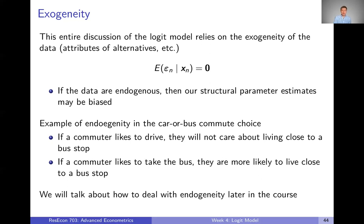Let's look at an example of endogeneity, going back to the car versus bus commute choice. If a commuter likes to drive, then they're not going to care about how close they live to a bus stop. But if a commuter knows that they like taking the bus, they're going to be more likely to live close to a bus stop. So we're going to see in the data: people live far away from a bus stop and they drive. People live close to the bus stop and they take the bus.